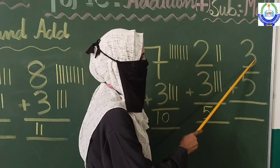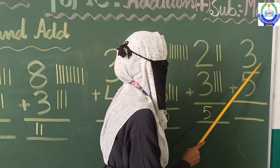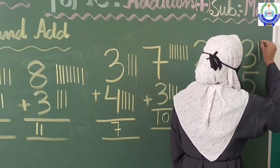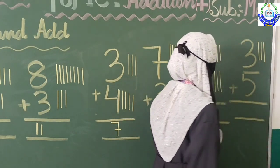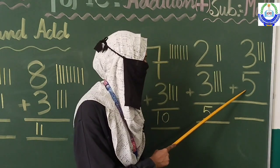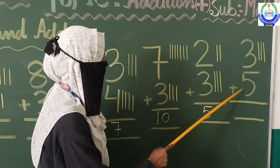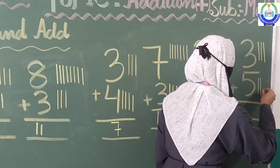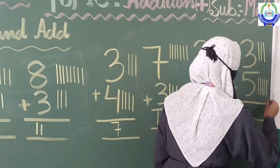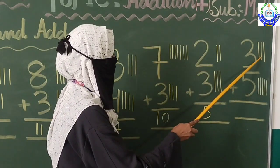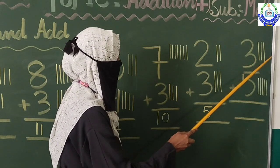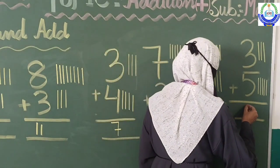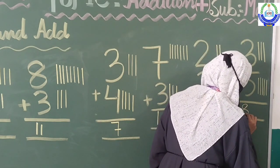Move to the next number. Which number is here, students? This is three. We will draw three lines: one, two, three. Next, which number is here? This is five. Let's draw five lines: one, two, three, four, and five. Now let's count them all: one, two, three, four, five, six, seven, and eight. We will write here: eight.